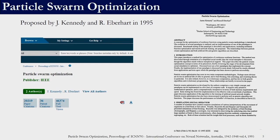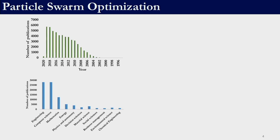Particle Swarm Optimization was proposed by Kennedy and Eberhart in 1995. It was presented at the International Conference of Neural Networks in Australia. Ever since it has gained a lot of attention — right now it has more than 20,000 paper citations. This shows an exponential increase over the years in publications that have cited particle swarm optimization. As a meta-heuristic technique, it can be used in any domain whenever we have an optimization problem, especially when problems are non-linear, mixed-integer non-linear programming, or black-box optimization.